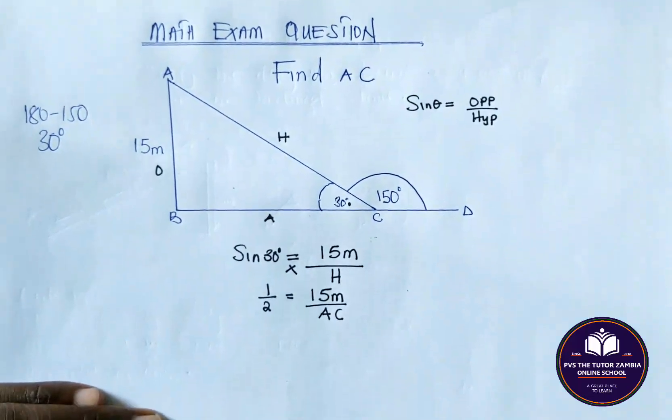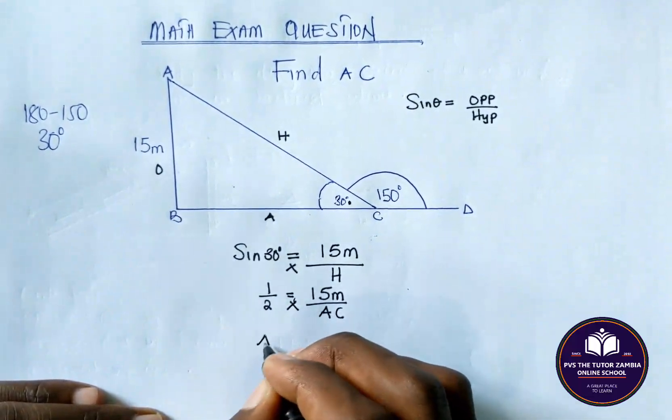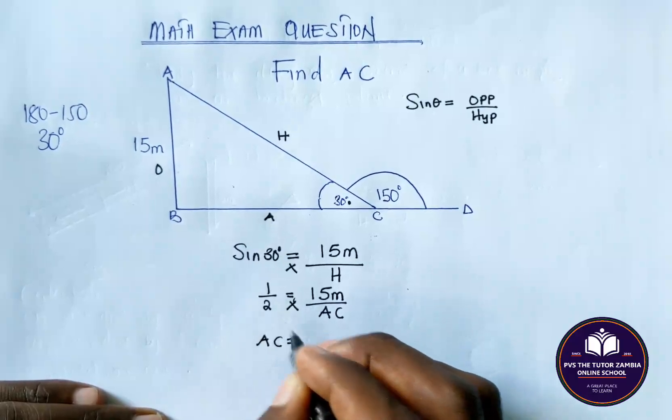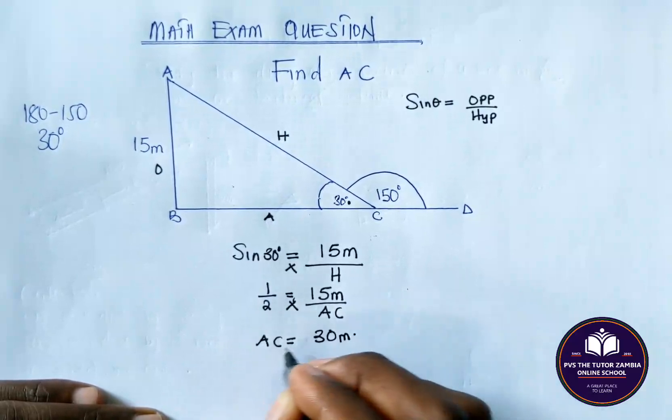And from there, we'll be able to cross multiply again. So there we have AC equal to 2 times that. We get 30 meters.